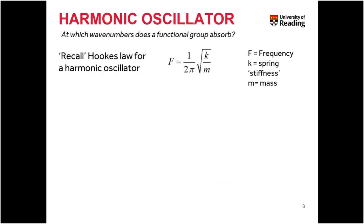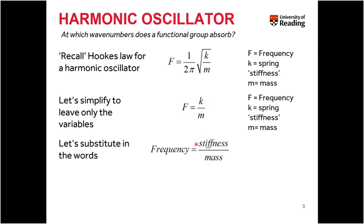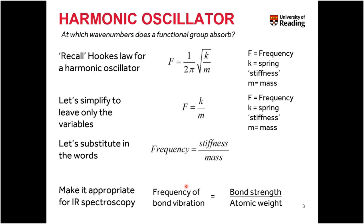To understand why different functional groups vibrate in different regions, we're going to look at some basic maths. You don't need to recall this — I just want to show that there is a physical basis for why different vibrations occur in the regions that they do. We'll start with Hooke's law for a simple harmonic oscillator, where frequency equals 1 over 2π times the square root of spring stiffness divided by mass.